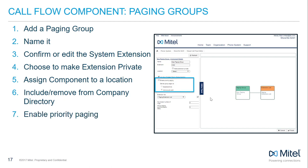Enable priority paging if so desired. By default, priority paging is not enabled and pages are delivered as a call. When enabling priority paging, if a user is on a call when a page is sent, the active call is immediately placed on hold and the page is delivered by whatever method is selected. Choose between pages being delivered by speakerphone or by active audio path, which is whatever audio path is in use at the time the page is sent.